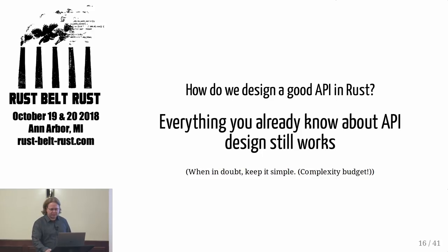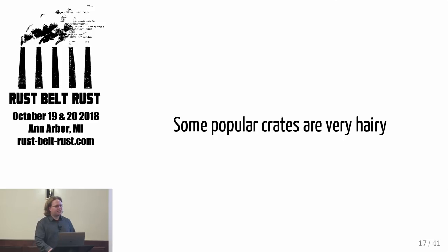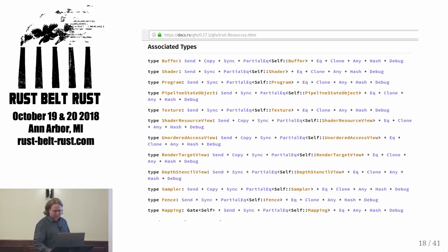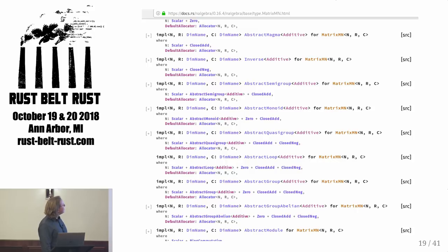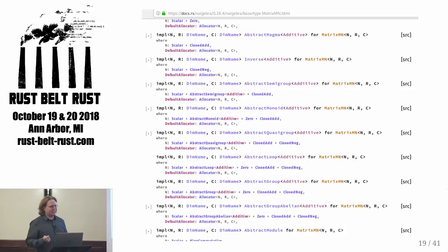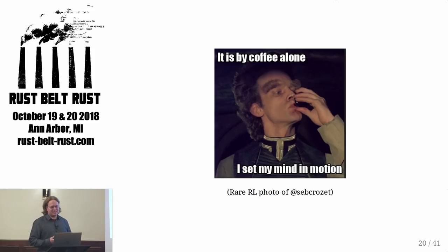Another problem I encounter often is that some popular crates are very hairy. When people ask about options for drawing graphics, someone mentions GFX-RS — which is awesome — and they go to the docs and they see a trait with 12 associated types. I usually call it quits after only like seven or eight. Or they ask how to do matrix math, look at nalgebra, and see the matrix type, which is almost impossible to read. I call it 'trait salad' — just a pile of different stuff all mixed up. But it turns out that what nalgebra is doing is teaching the Rust compiler how to do fundamental math by encoding it in the type system. It completely rules out a lot of math errors at compile time — if you have a transform vector and a scale vector, you can't add them together; the type checker catches it.